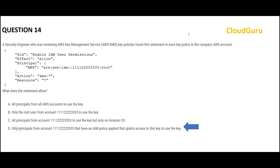A quick shortcut: at a high level, you can see there is an Allow permission effect in the code. Out of all the options, only the correct option has this defined. You can go that fast to answer this type of question.